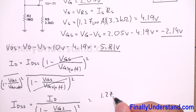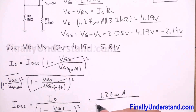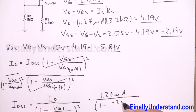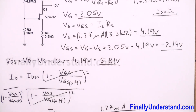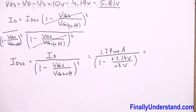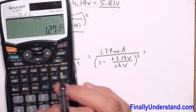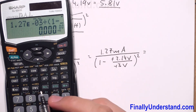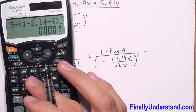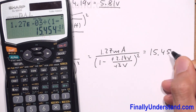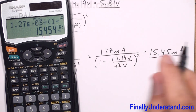Substituting our values: IDSS = 1.27 milliamps divided by (1 - (-2.14 V) / (-3 V))², where VGS(off) = VP = -3 volts. The two negatives cancel, giving 1.27×10⁻³ divided by (1 - 2.14/3)² = 15.45 milliamps. The problem is now solved.